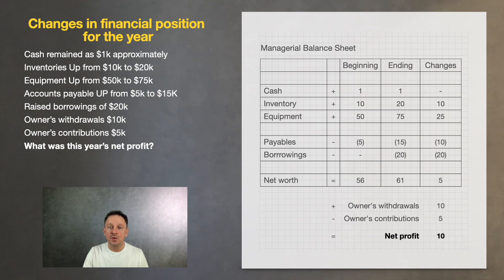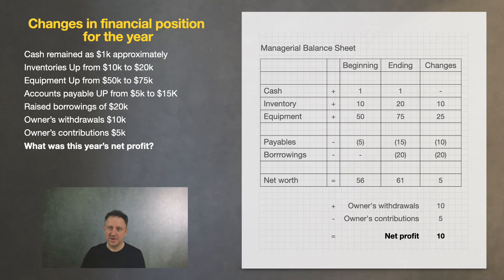One half was invested in new equipment, and another half was taken out as dividends. That is actually what it shows.